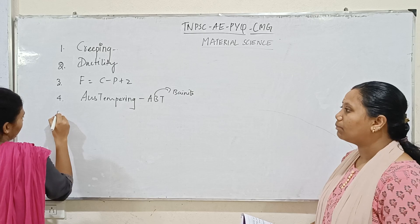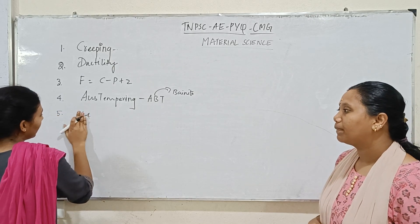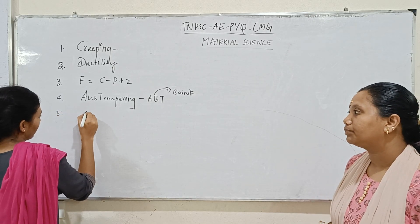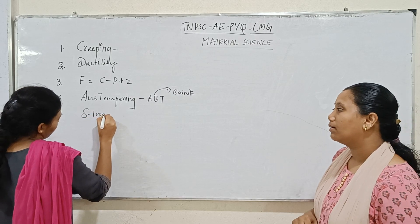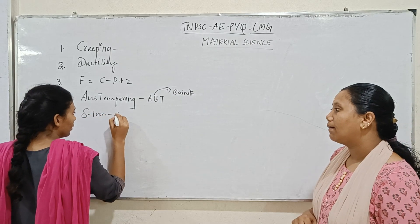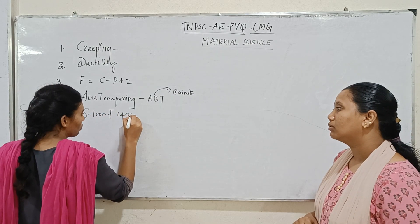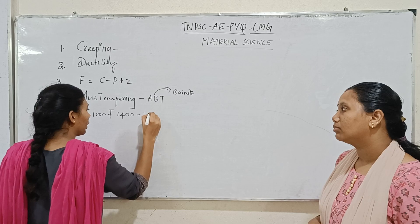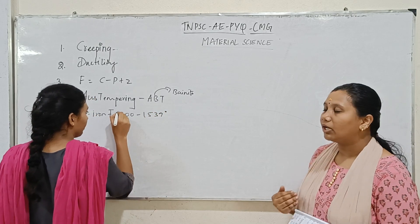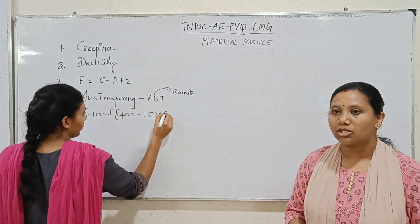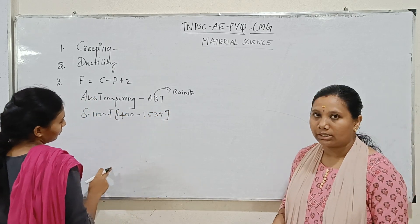The delta iron temperature range: the delta iron temperature range is 1400 to 1539 degrees Celsius.